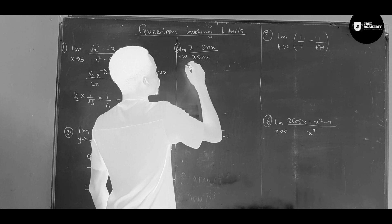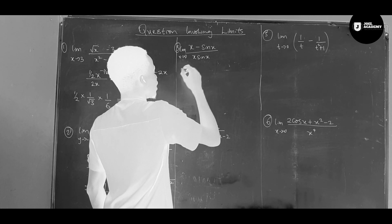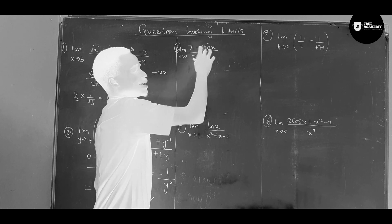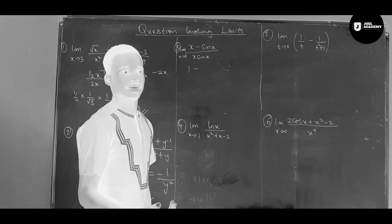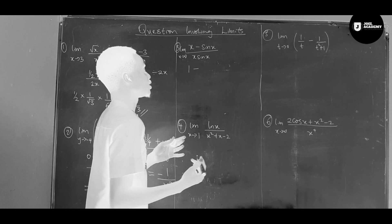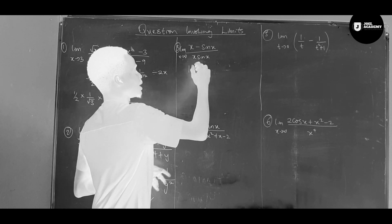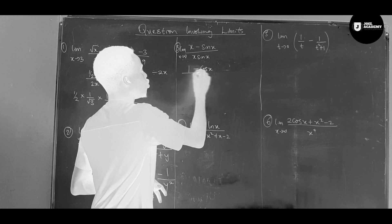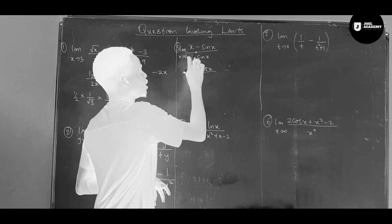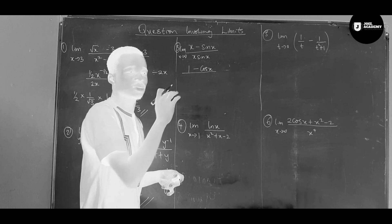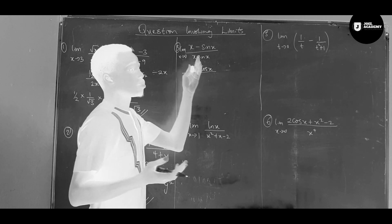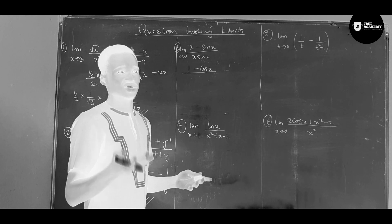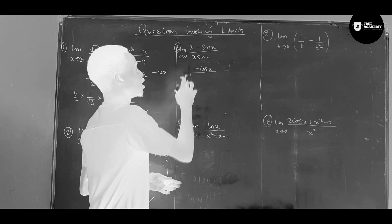Differentiate x, which gives us one. Minus differentiate sin x, which gives us cos x. That's the numerator. Now for the denominator we have a product, so we'll use the product rule.